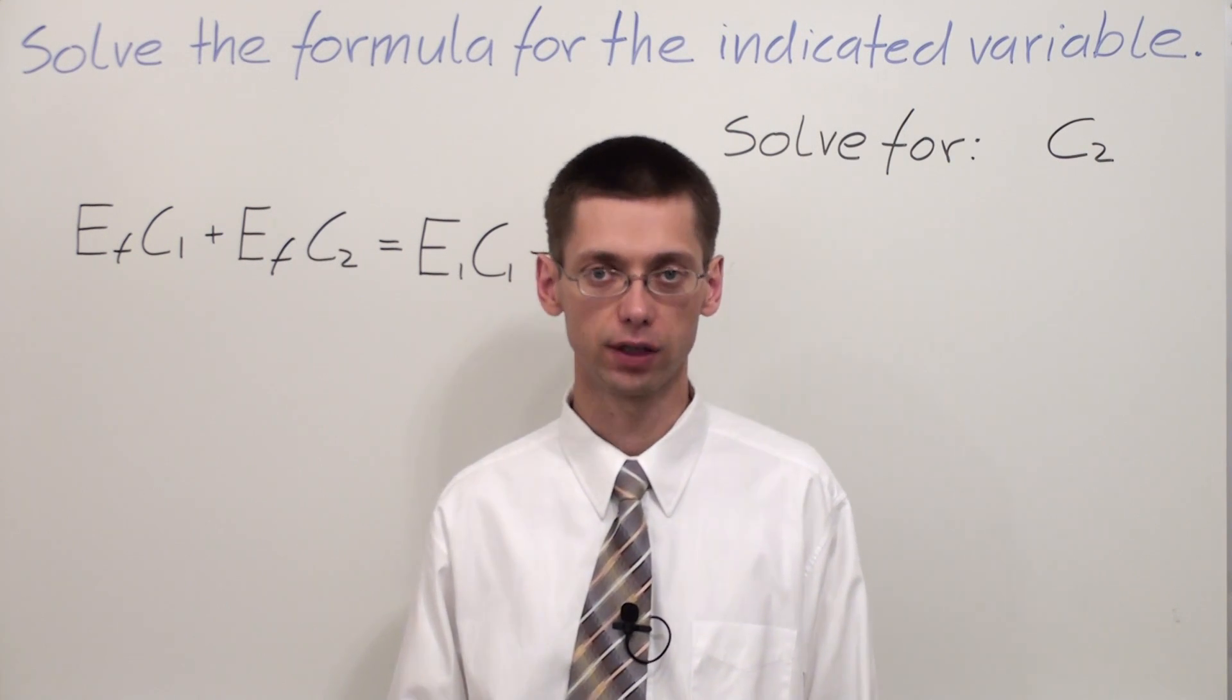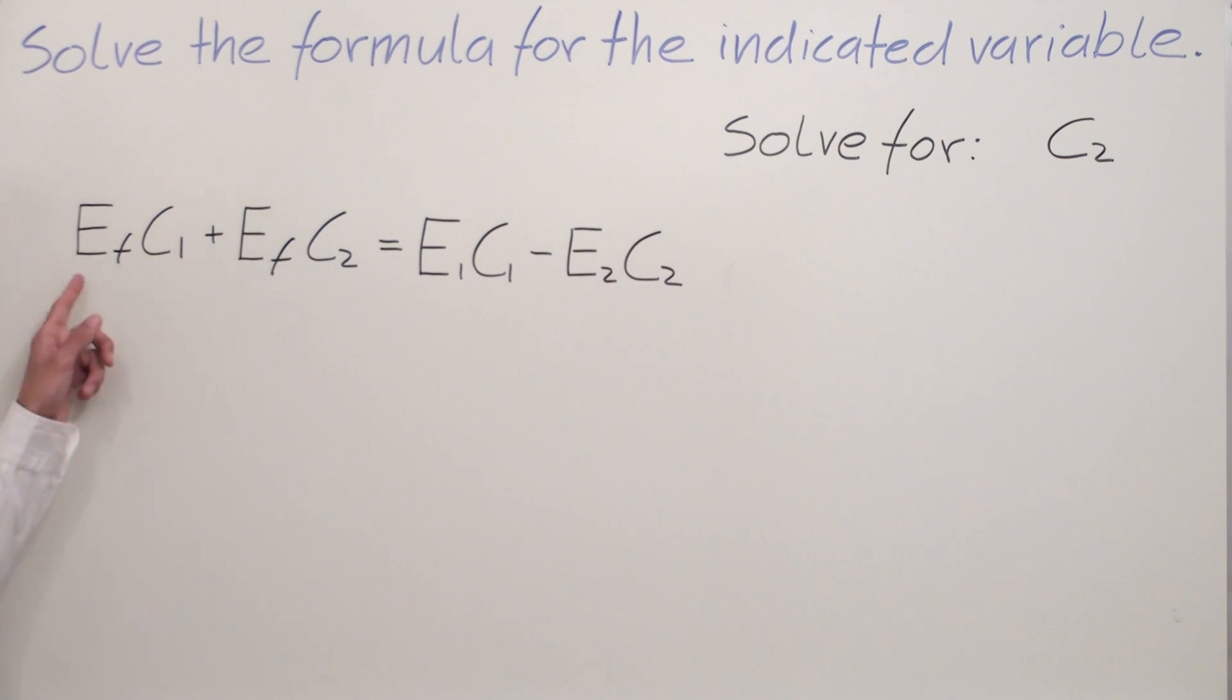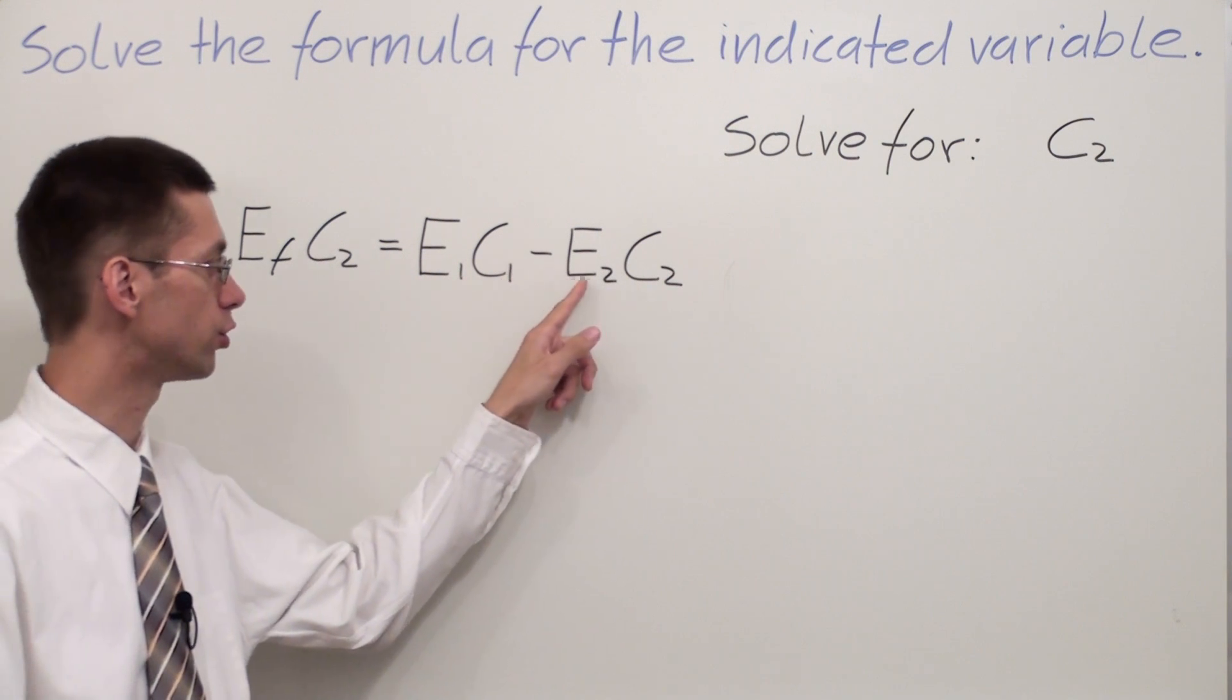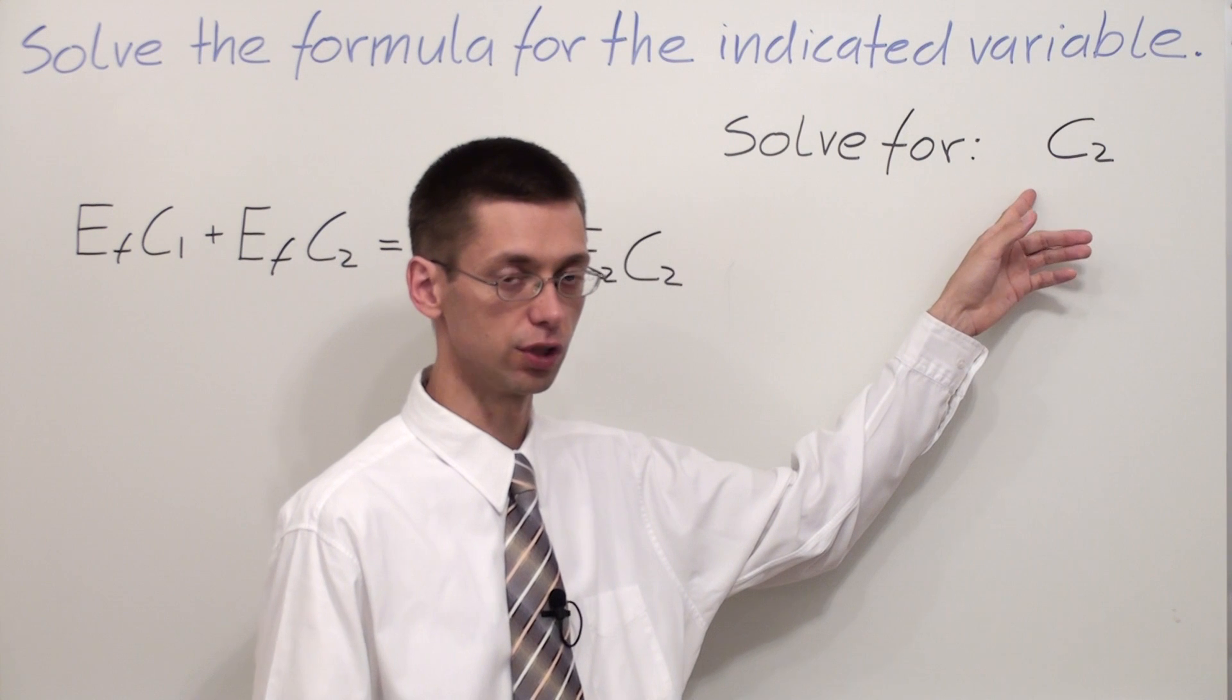We have another example. The formula says EF C1 plus EF C2 equals E1 C1 minus E2 C2. This time I'm looking for C2.